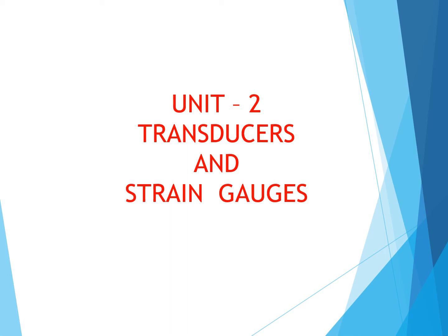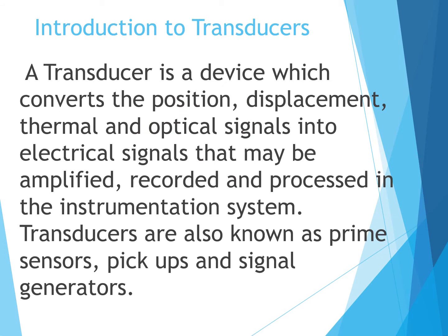Welcome students to Unit 2 of subject 15ME33T, Mechanical Measurement. We are starting with the second unit on transducers and strain gauges. A transducer is a device which converts position, displacement, thermal, and optical signals into electrical signals that may be amplified, recorded, and processed in an instrumentation system. Transducers are also known as primary sensors, pickups, and signal generators.